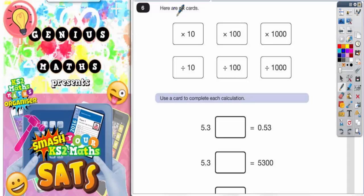Remember, if you're multiplying by 10, the digits have moved forwards one place. You know it's one place because there's one zero.